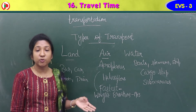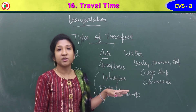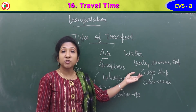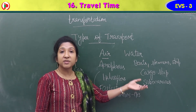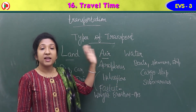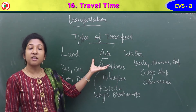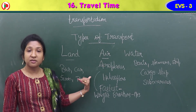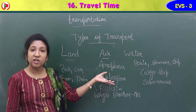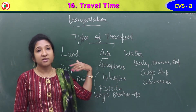Water transport includes ships and boats. Cargo ships carry goods from one place to another. Submarines are ships that travel under the water. So the three means of transport are land, air, and water. Examples: land — bus, scooter, bike; air — aeroplane, helicopter; water — ship, boat.